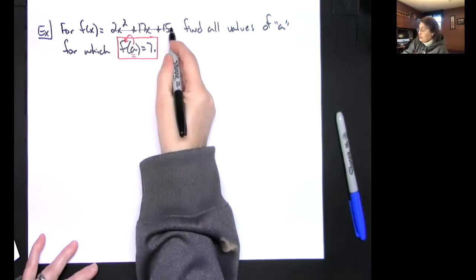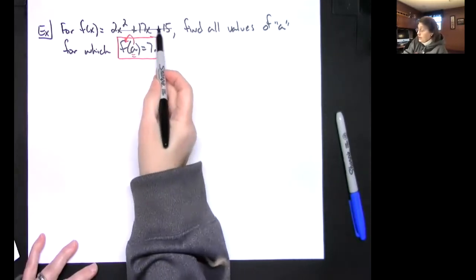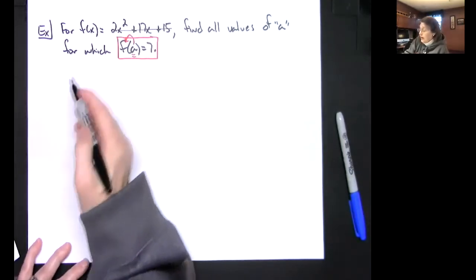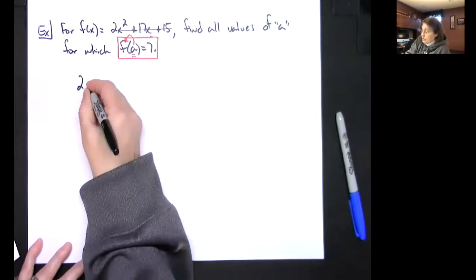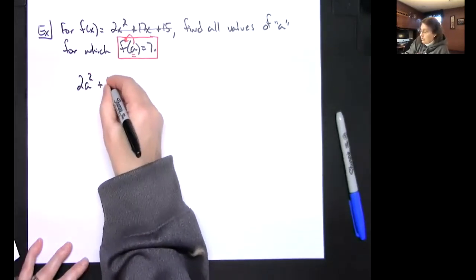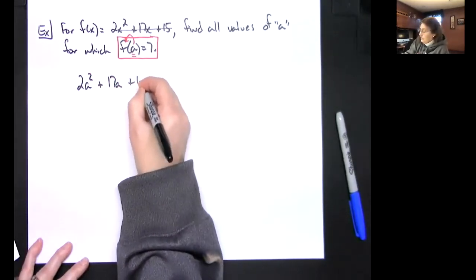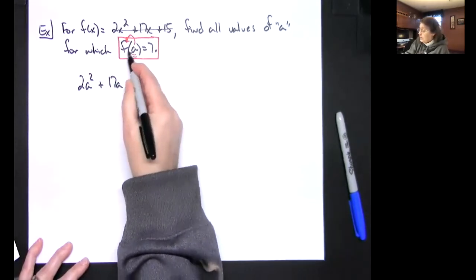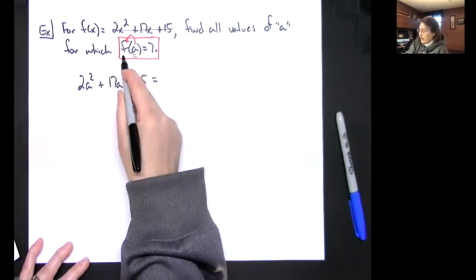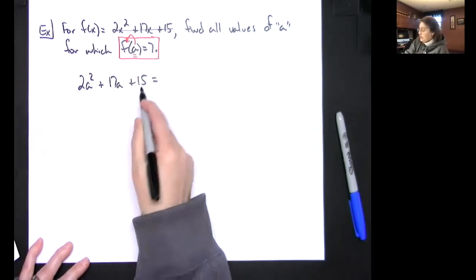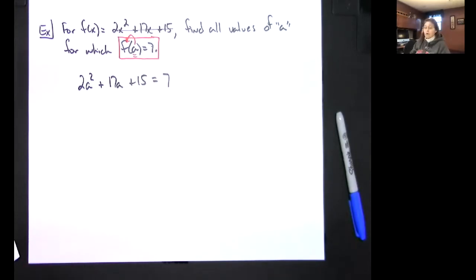I'm going to take this function right here and I'm going to put a into it. So I'm going to have 2a squared plus 17a plus 15. It said put a in the function — that's what I did. Equals, put 7 down.